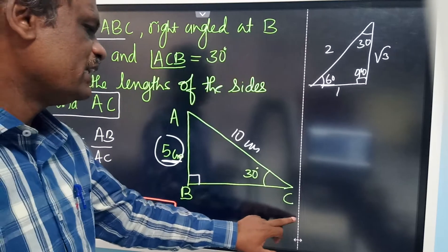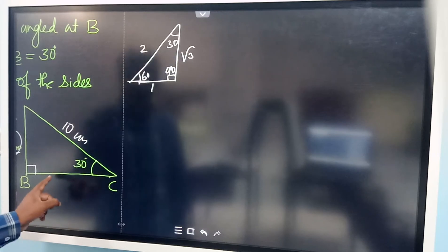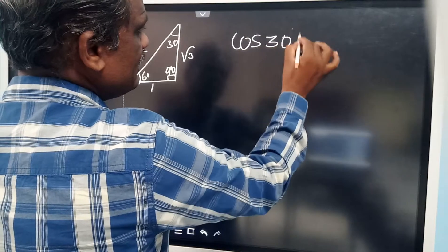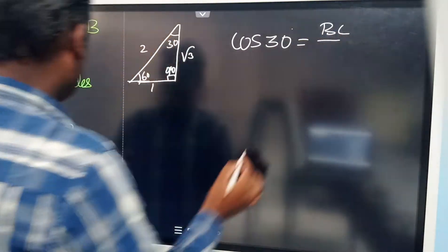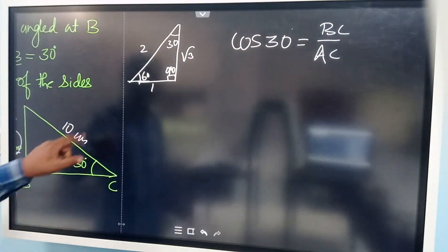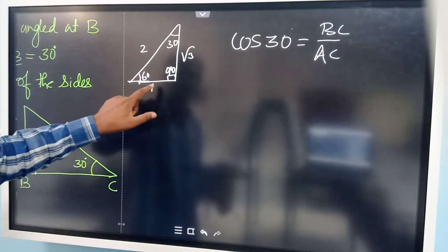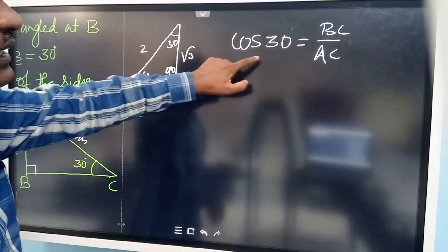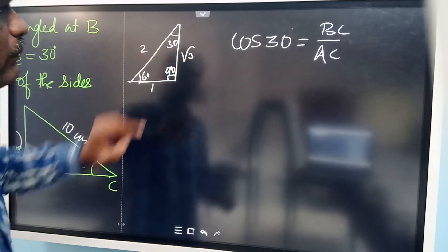Similarly, we want to find BC. BC can be calculated using cosine 30, since BC is the adjacent side and AC is the hypotenuse with reference to the 30-degree angle. Cosine 30 means adjacent side by hypotenuse. From the 1, 2, root 3 reference triangle, cosine 30 equals root 3 by 2.